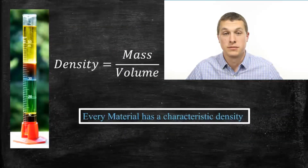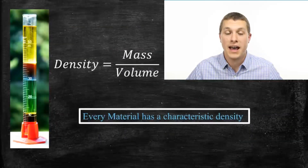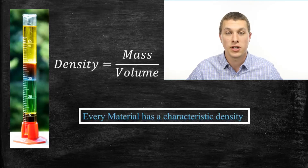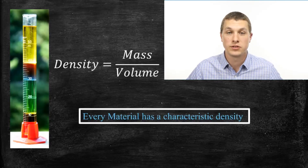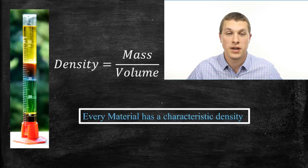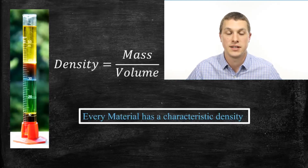Density is basically just a measure of how much mass there is in something per volume. And you can see that in this graduated cylinder, all those different liquids of different colors have sorted out to different heights. The least dense material floats up to the top, and the most dense material sinks down to the bottom. And based on where they sort themselves, you can tell what material those are made out of.